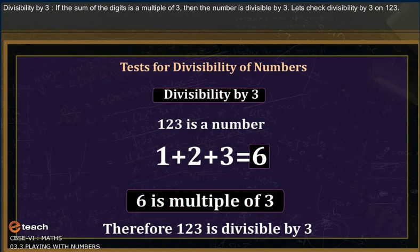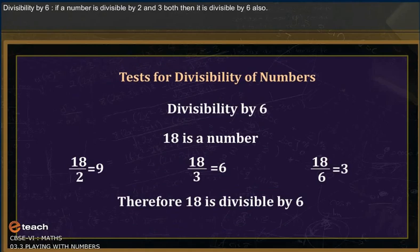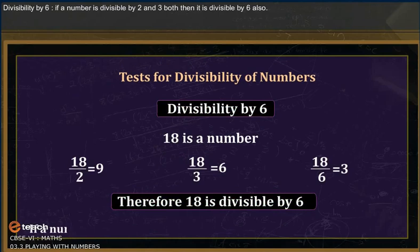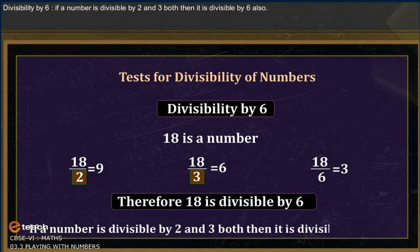Divisibility by six: if a number is divisible by both two and three, then it is divisible by six also.